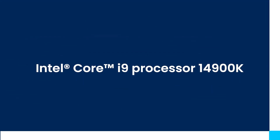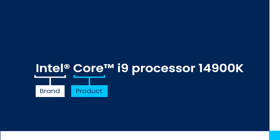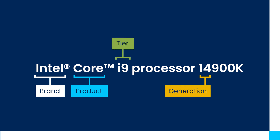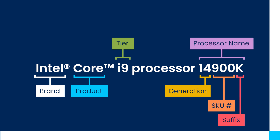First off, let's look at the previous generation of processors. Here we see the Intel Core i9-14900K processor. The first section denotes Intel, which is the corporate brand. The second, Core, being the product brand. i9 referring to the performance tier. The 14 referring to the 14th generation of this chip. 900, which also refers to the performance tier — where i7 would be 700, i5 would be 500, but in this case i9 is 900. And then the suffix, which usually denotes what they are designed and optimized for. In this case, K refers to high performance and unlocks for overclocking.